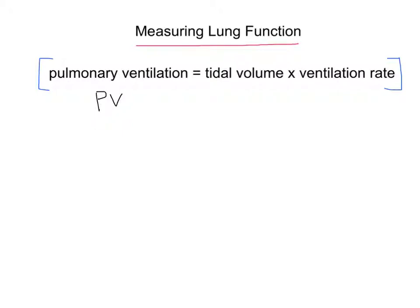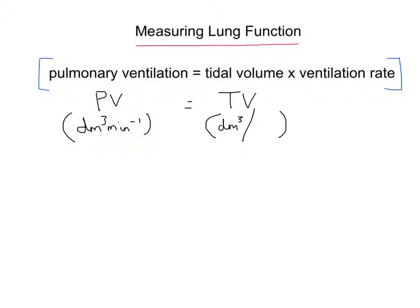Pulmonary ventilation tells you the volume of air that is taken into the lungs in a single minute, and its units are decimetre cubed per minute. Tidal volume and ventilation rate are the two things used to work it out. Tidal volume is the volume of air in each breath — written as TV, it's a volume, either in cubic decimetres or litres.